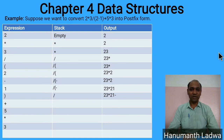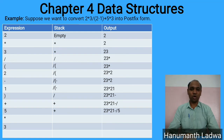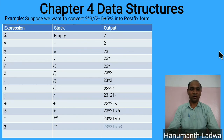Next we encounter the + operator. We pop / from the stack and output it (since / has higher priority than +), then push +: stack = [+], output = '2 3 * 2 1 - /'. Next token is operand 5, output it: output = '2 3 * 2 1 - / 5'. Next is the * operator; since * has higher priority than +, push it: stack = [+, *], output = '2 3 * 2 1 - / 5'. Next token is operand 3, output it: output = '2 3 * 2 1 - / 5 3'.